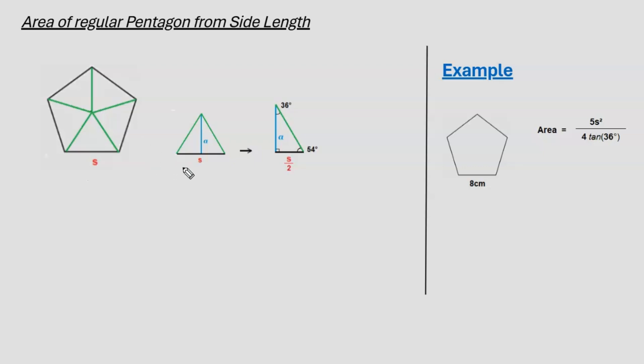For each of these triangles, the base is a side length S, and the height of the triangle is the apothem of the pentagon, A. The area of one of these smaller triangles is given by the standard formula for the area of a triangle, which is half times the base, which is S, times the height, which is A.